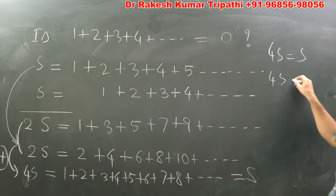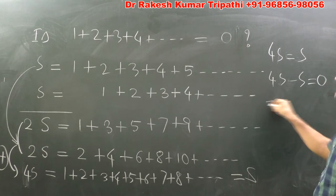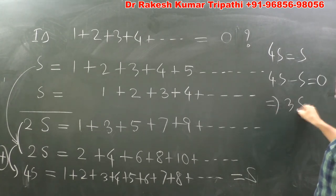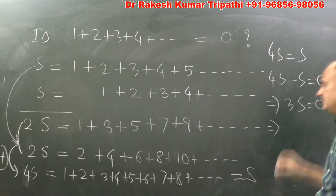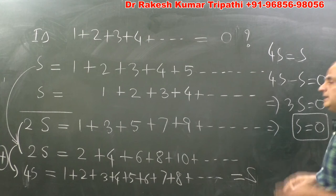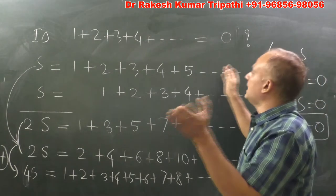So 4S minus S is equal to 0, which implies what? It implies 3S is equal to 0, and what does it imply? It implies S is equal to 0.